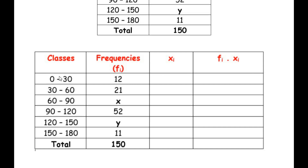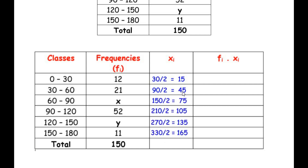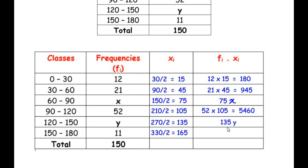For the class 0 to 30, the class mark is (0+30)/2 = 15. For 30 to 60, it is (30+60)/2 = 45. Continuing the same procedure for all classes. Then we multiply each frequency by its class mark: 12×15 = 180, 21×45 = 945, x×75 = 75x, 52×105 = 5460, y×135 = 135y, and 11×165 = 1815.